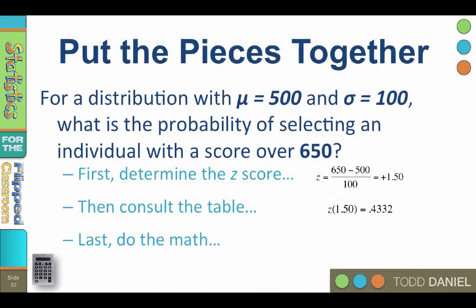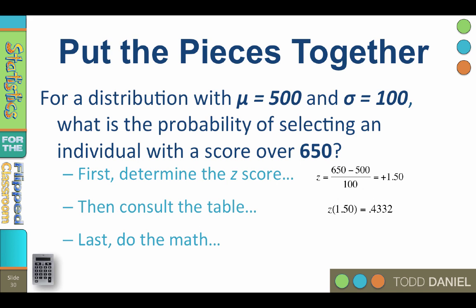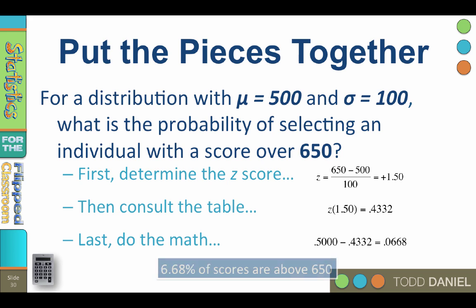Finally, do the math. Subtract the z proportion from 0.500. 0.500 minus 0.4332 equals 0.0668. We can move the decimal two points to the right, and say that 6.68% of scores are above 650.